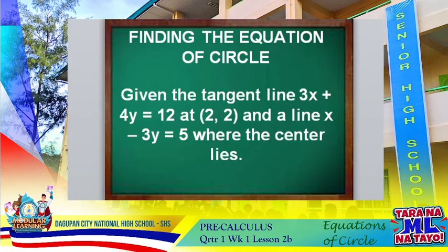For this problem we only have a tangent line and a center line. The key relationship is that when the center and the point of tangency are connected, they form a perpendicular line to the tangent. So we need to find that perpendicular line.